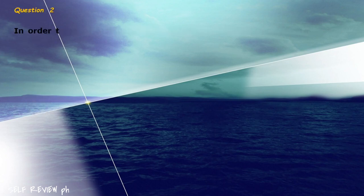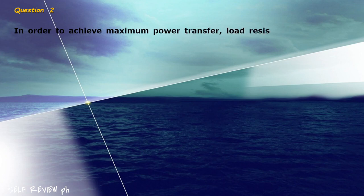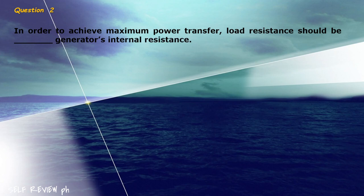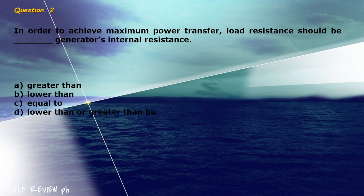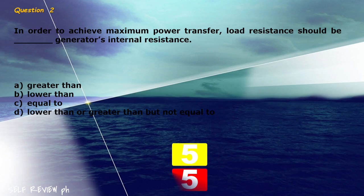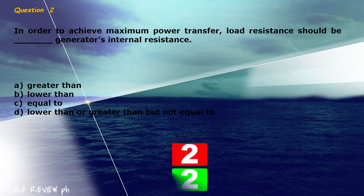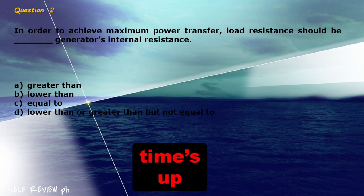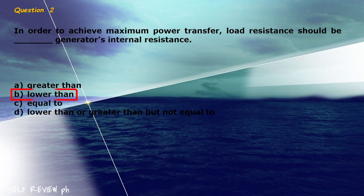Question 2: In order to achieve maximum power transfer, load resistance should be blank the generator's internal resistance. A) greater than, B) lower than, C) equal to, D) lower than or greater than but not equal to. The correct answer is letter B, lower than.